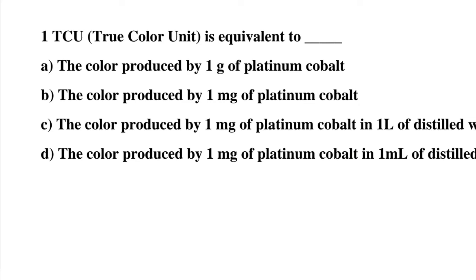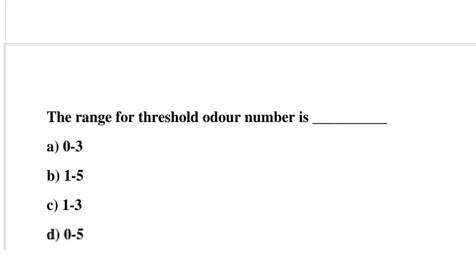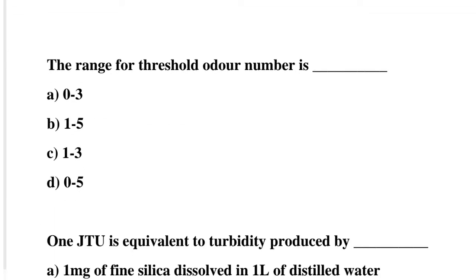Next question: the range for the threshold odor number is option A: 0 to 3, option B: 1 to 5, option C: 1 to 3, option D: 0 to 5. The correct answer is option C: 1 to 3.